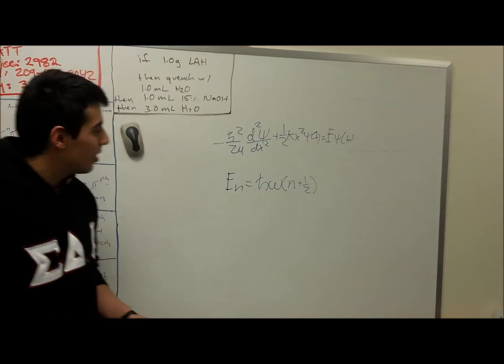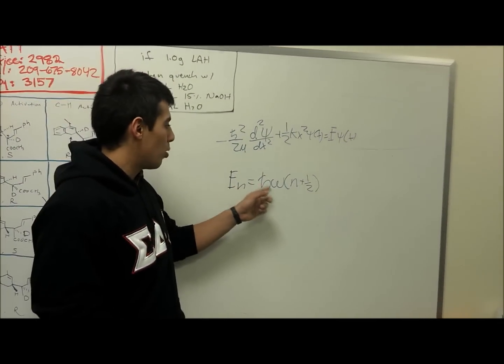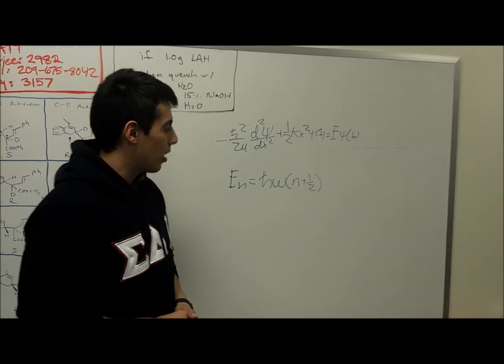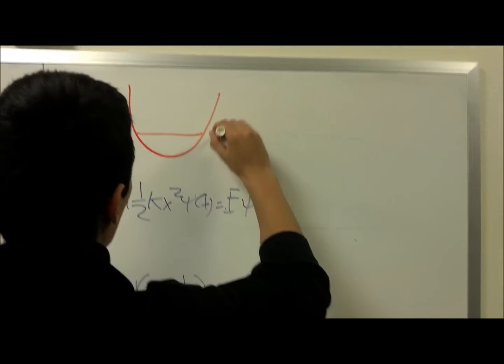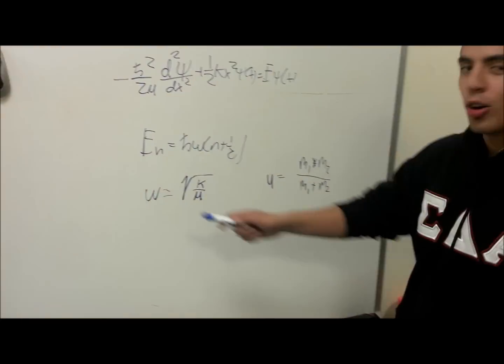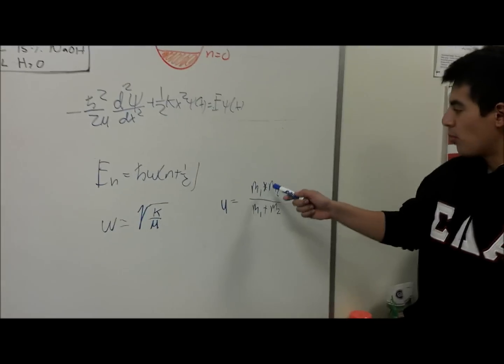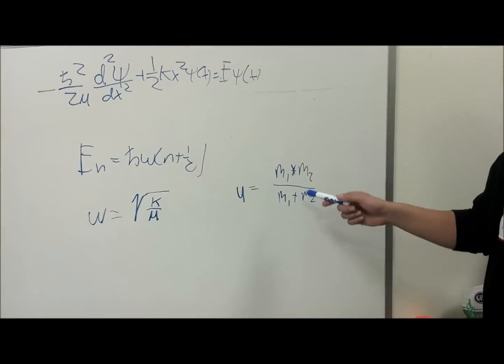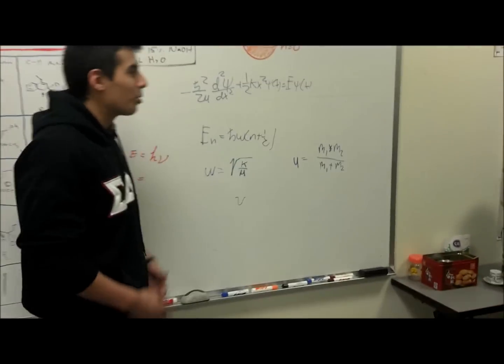As you can see here, in the ground state, when n equals zero, we're left with h bar omega times one half. And when graphed, we obtain this. As you can see here, omega is square root of k over mu. Mu is m1 times m2 over m1 plus m2.